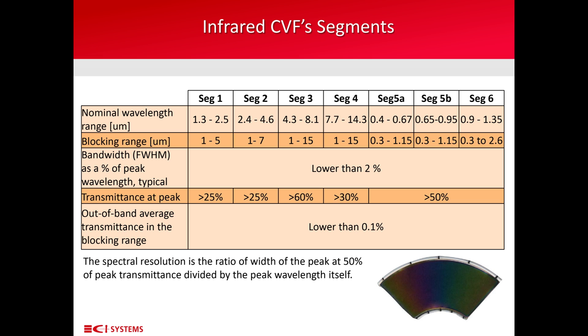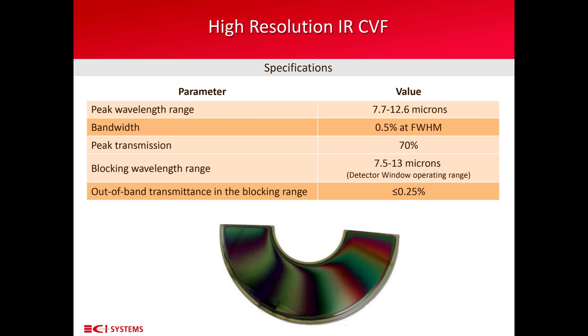Since the segments, as seen in the figure, have a 90-degree shape, when we glue four segments of consecutive ranges in one wheel, we can cover with two wheels the whole range from visible to 4.3 microns. An additional type of circular variable filter that CI has developed lately is what we call a high-resolution infrared circular variable filter.